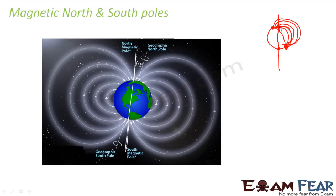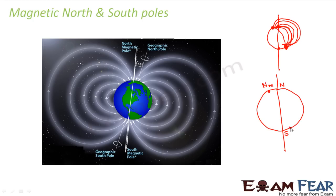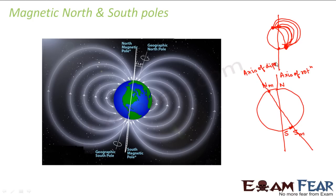It was found that the axis of the dipole does not coincide with the axis of rotation. The axis of rotation is nothing but the axis which joins the geographic north and geographic south pole. The line which joins the magnetic north and the magnetic south is known as the axis of the dipole, because magnetic north and magnetic south together act as a magnetic dipole. The axis of rotation and the axis of dipole do not coincide — they make an angle of approximately 11.3 degrees.